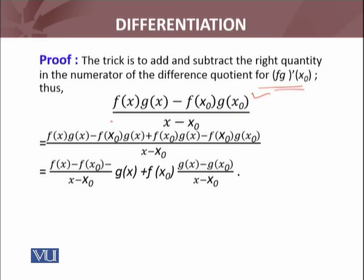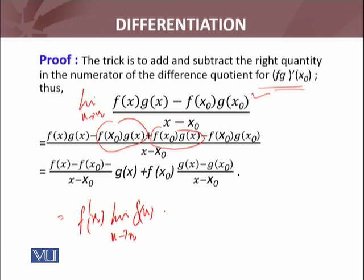I added and subtracted this term so that I have [f(x) - f(x₀)]. Taking the limit as x approaches x₀, this will become f'(x₀). lim(x→x₀) g(x) as it is, plus f(x₀) as it is, and this limit will become g'(x₀).